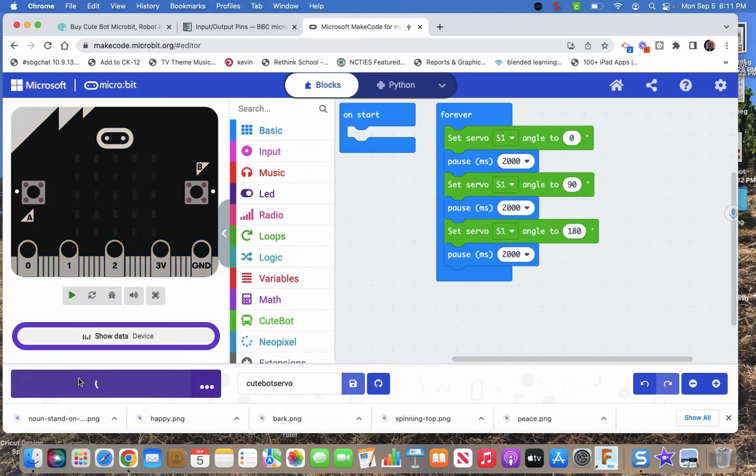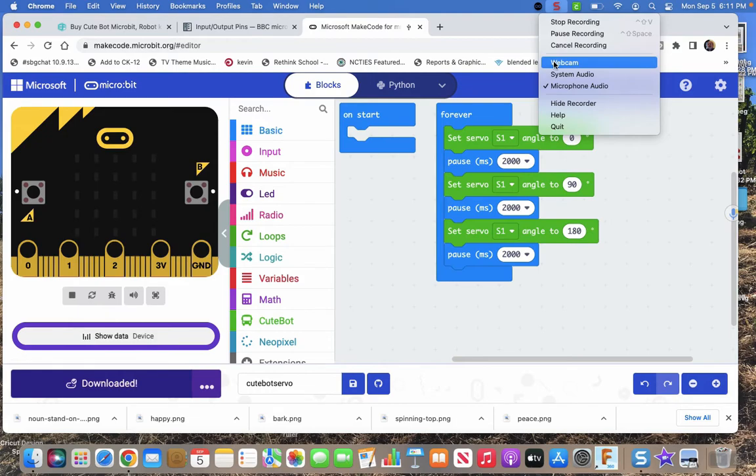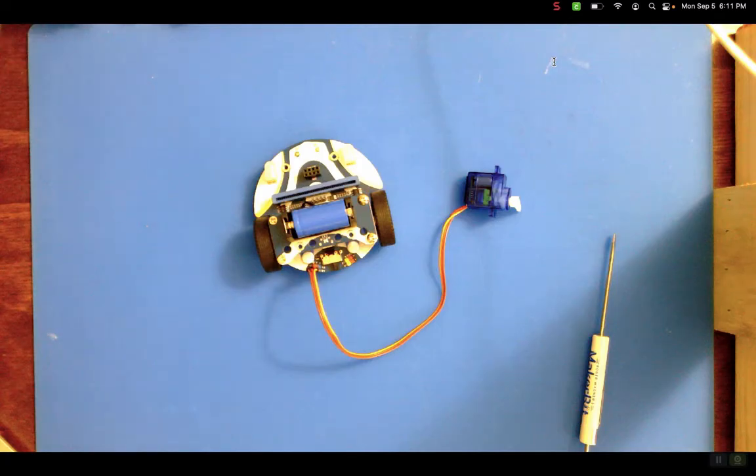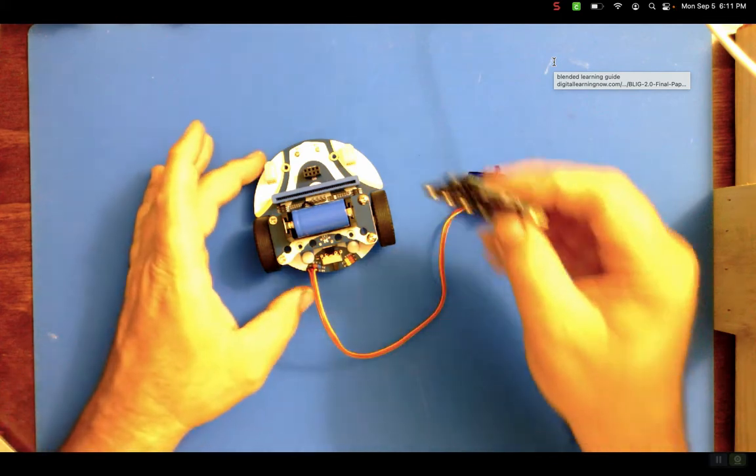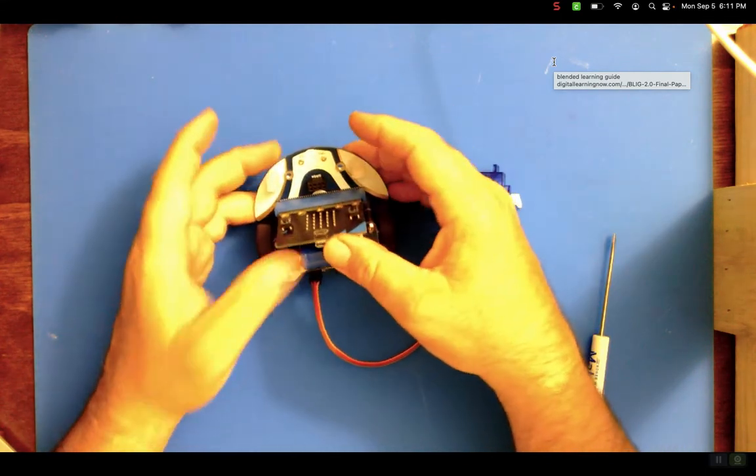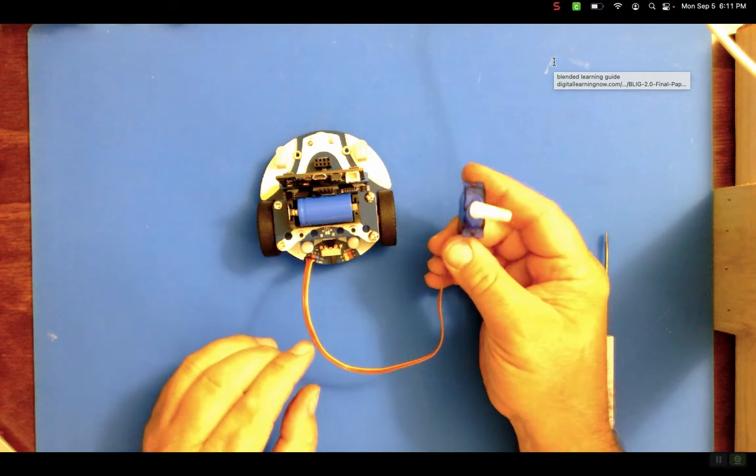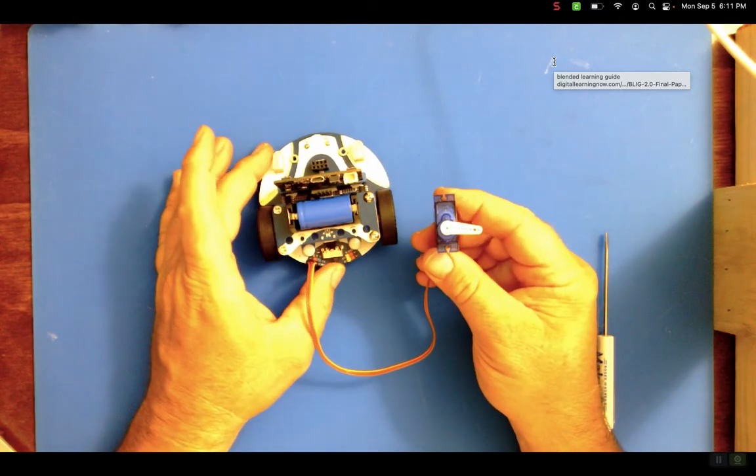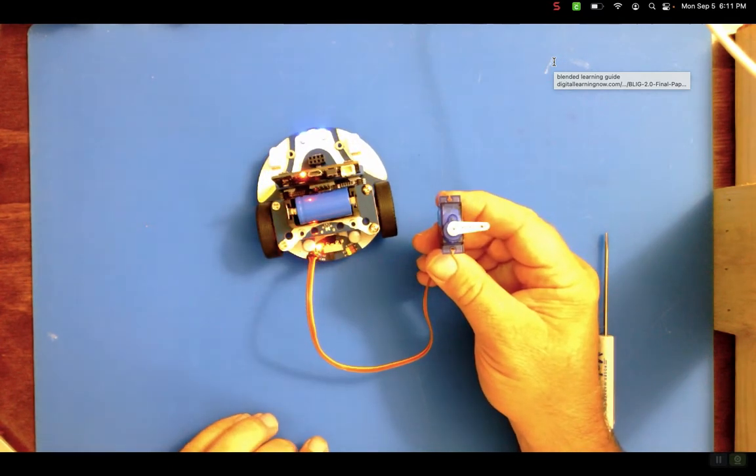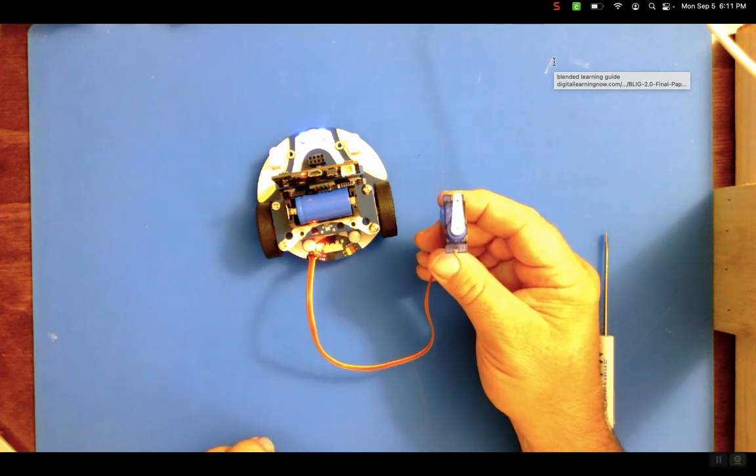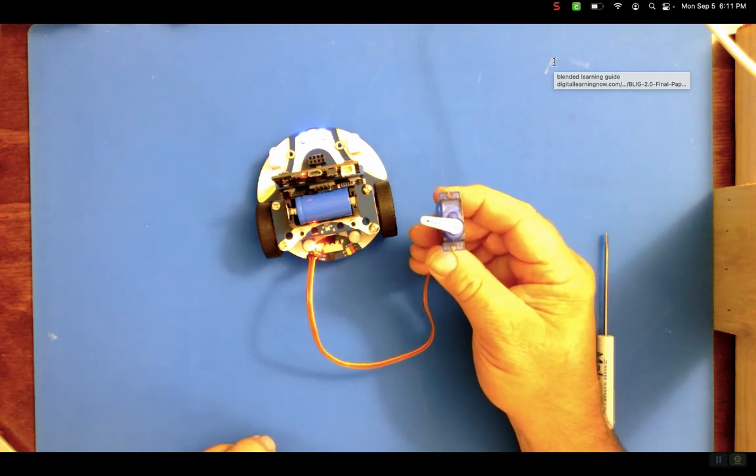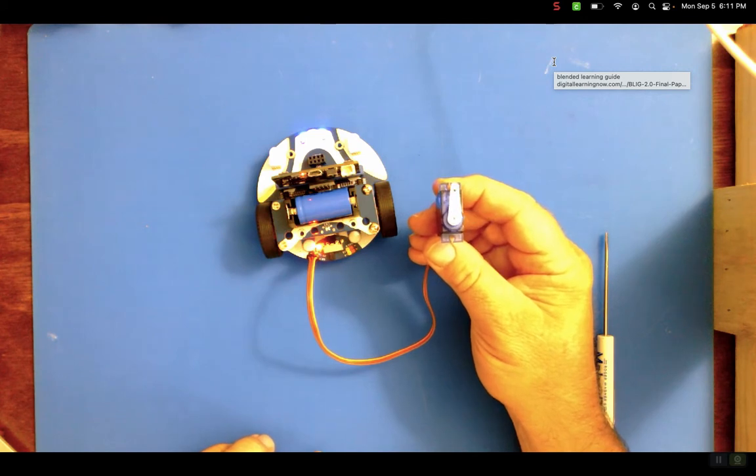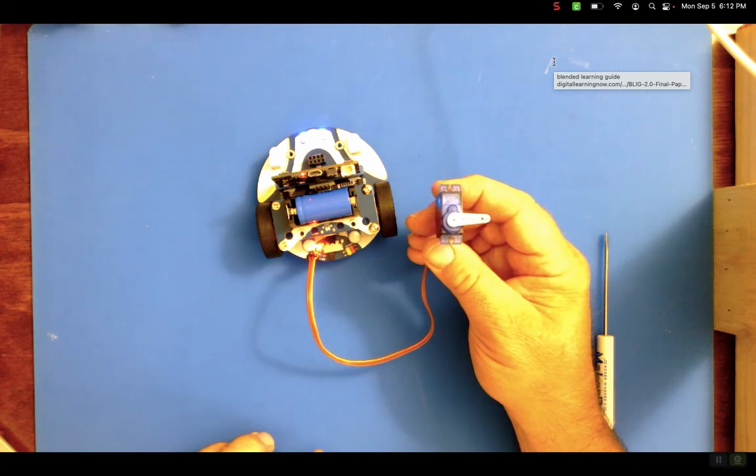My micro bit is plugged into my computer. We're going to come back to the webcam while that's downloading. It is downloaded. We're going to plug into our CuteBot. I'm going to hold this up. And then turn it on. So we should go to zero. Then 90. Then 180. Then back to zero. 90. 180.